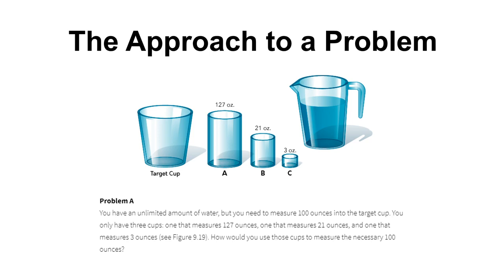Problem A says that we have an unlimited amount of water — we have a pitcher we can fill up as many times as needed. Our goal is to get exactly 100 ounces of water into our target cup. We have three cups available: Cup A holds 127 ounces, Cup B holds 21 ounces, and Cup C holds 3 ounces.